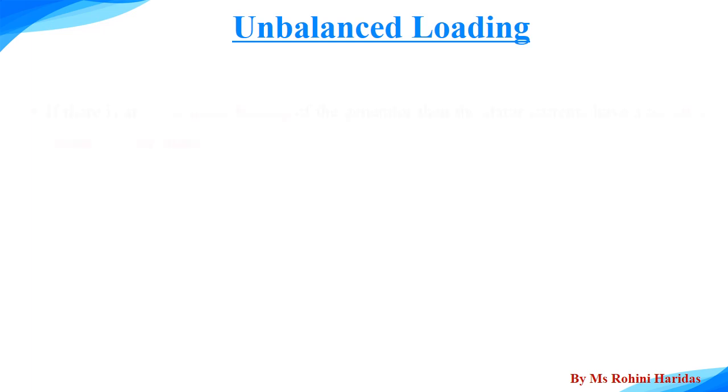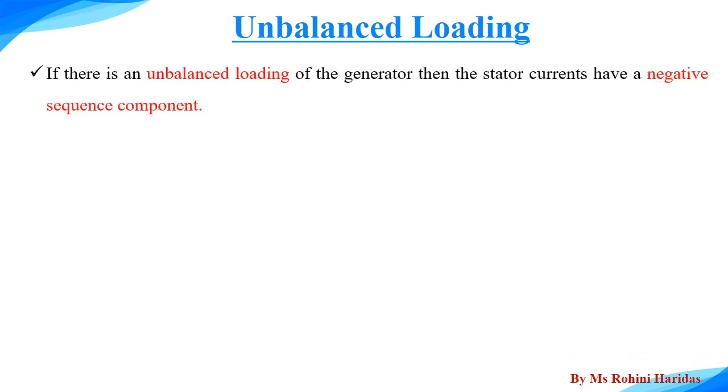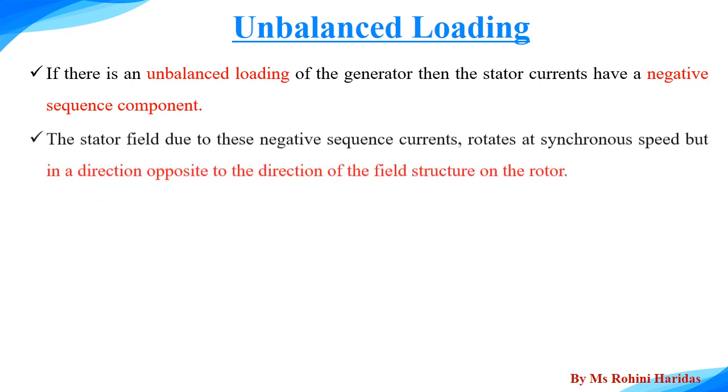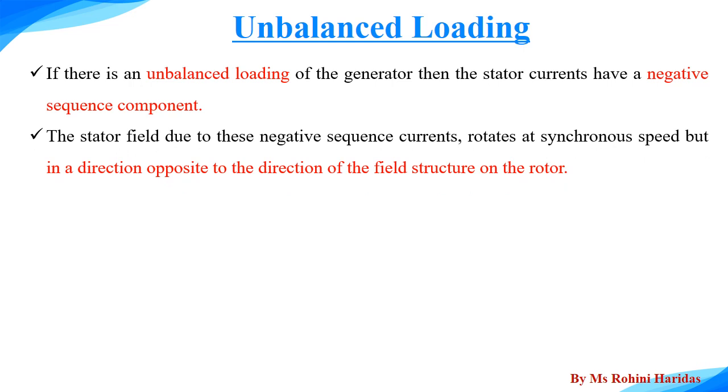Unbalanced loading. If there is an unbalanced loading of the generator, then the stator current have a negative sequence component. The stator field due to this negative sequence current rotates at a synchronous speed but in the direction opposite to that of the direction of field structure on the rotor.